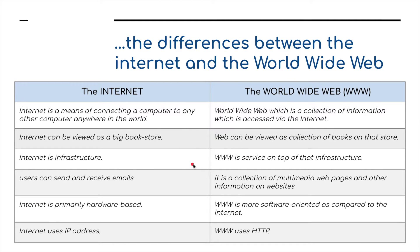To summarise: the internet is a means of connecting a computer to any other computer anywhere in the world — think of it as a big bookstore. It is an infrastructure, primarily hardware-based, used to send emails and using IP addresses. The World Wide Web is the information accessed via the internet — like the books within that bookstore. It is a service on top of the internet infrastructure: a collection of multimedia web pages, more software-oriented, and it uses HTTP — Hypertext Transfer Protocol.